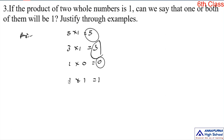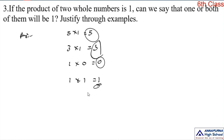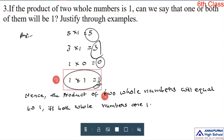If both the numbers are 1, the answer is also 1. If both numbers are 1, then the product is also 1. Hence the conclusion: the product of two whole numbers will equal 1 if and only if both whole numbers are 1.